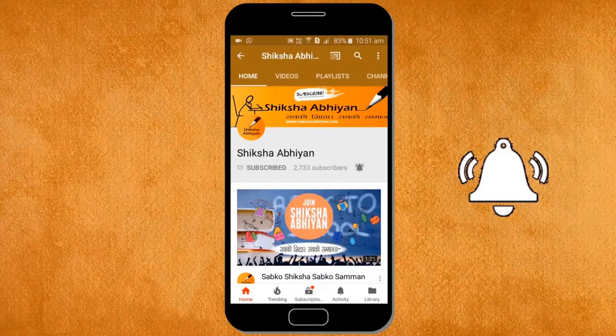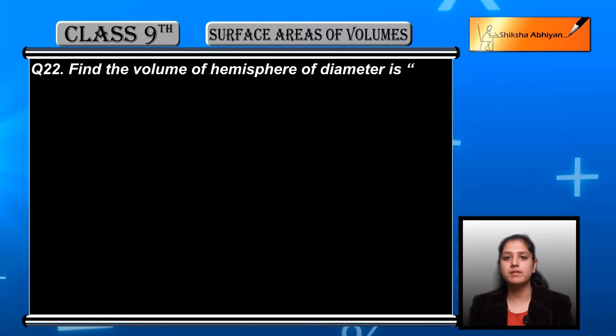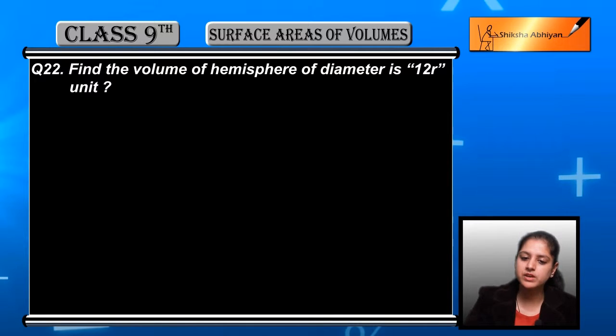Question number 22: Find the volume of hemisphere of diameter 12r units. We need to find the volume of a hemisphere whose diameter is given to us as